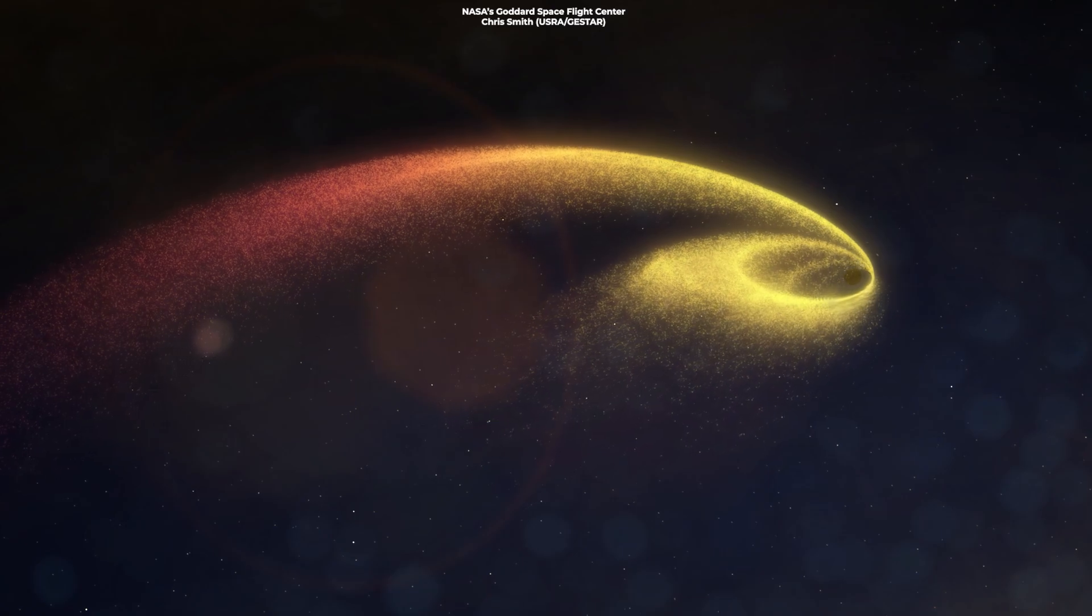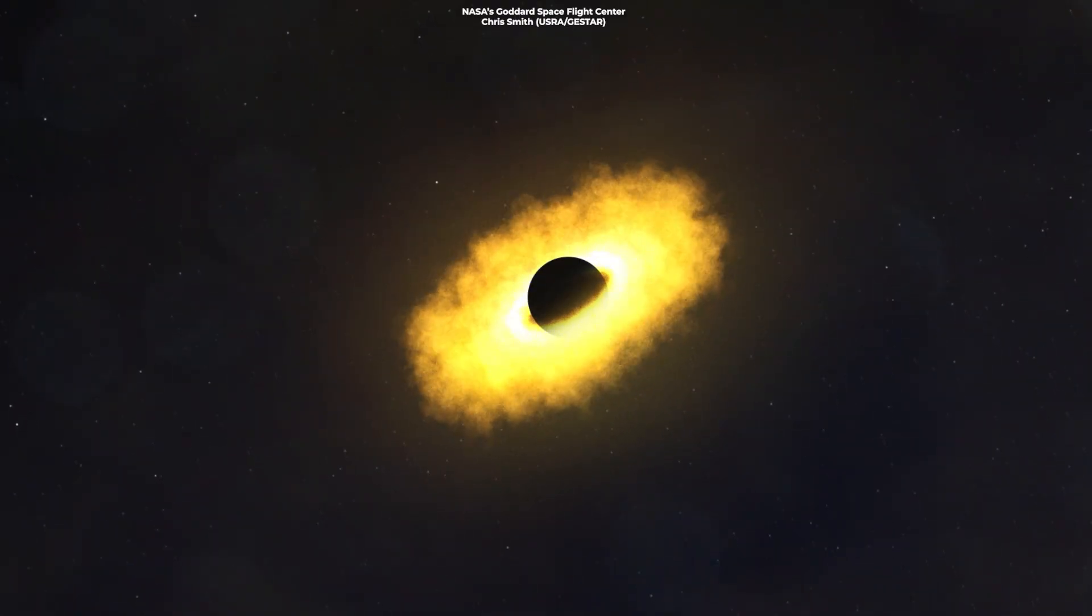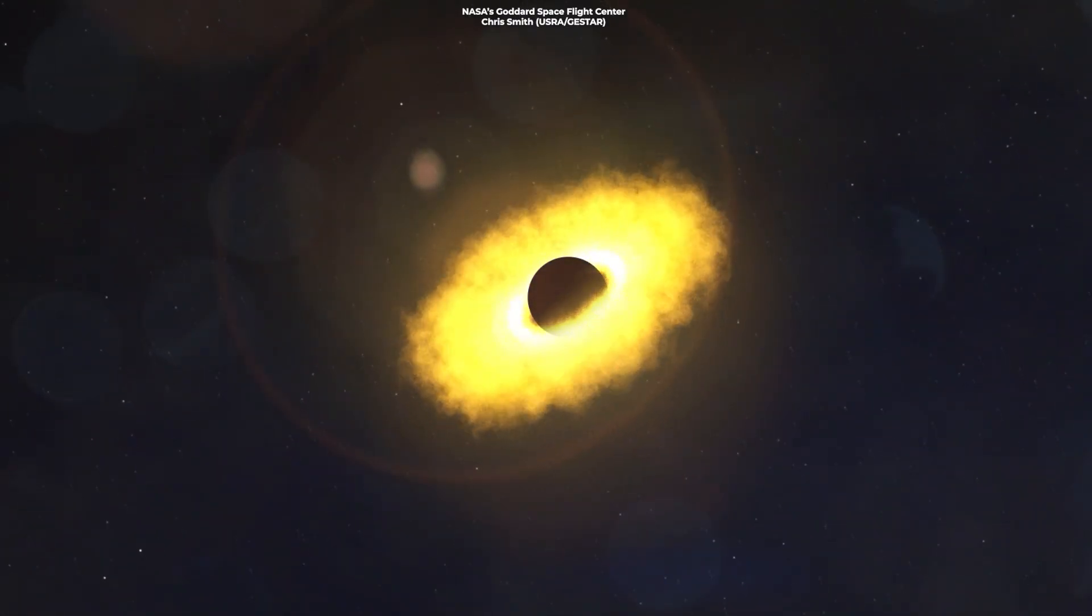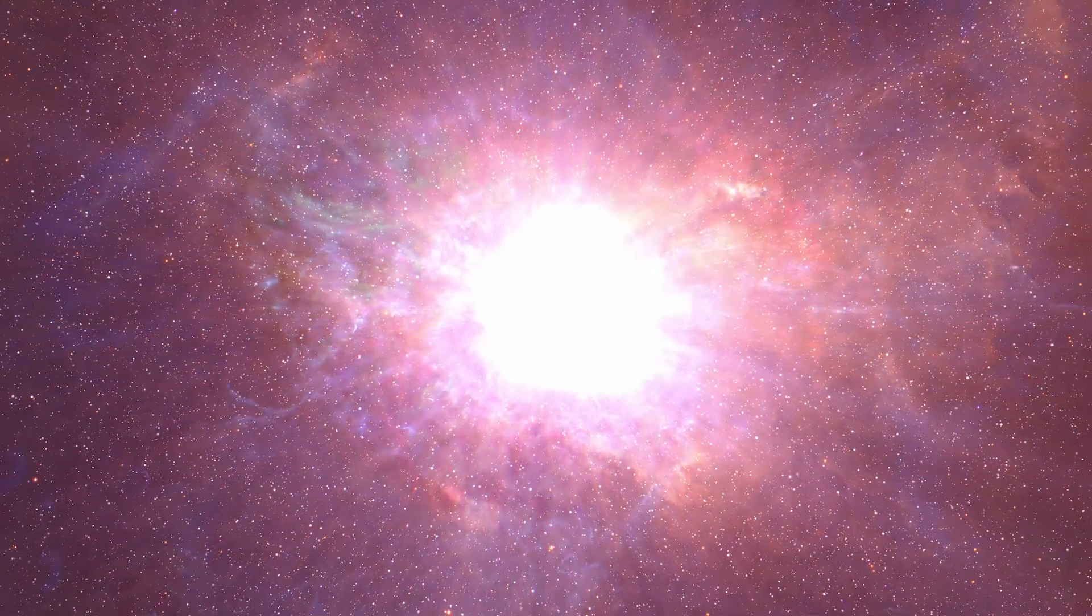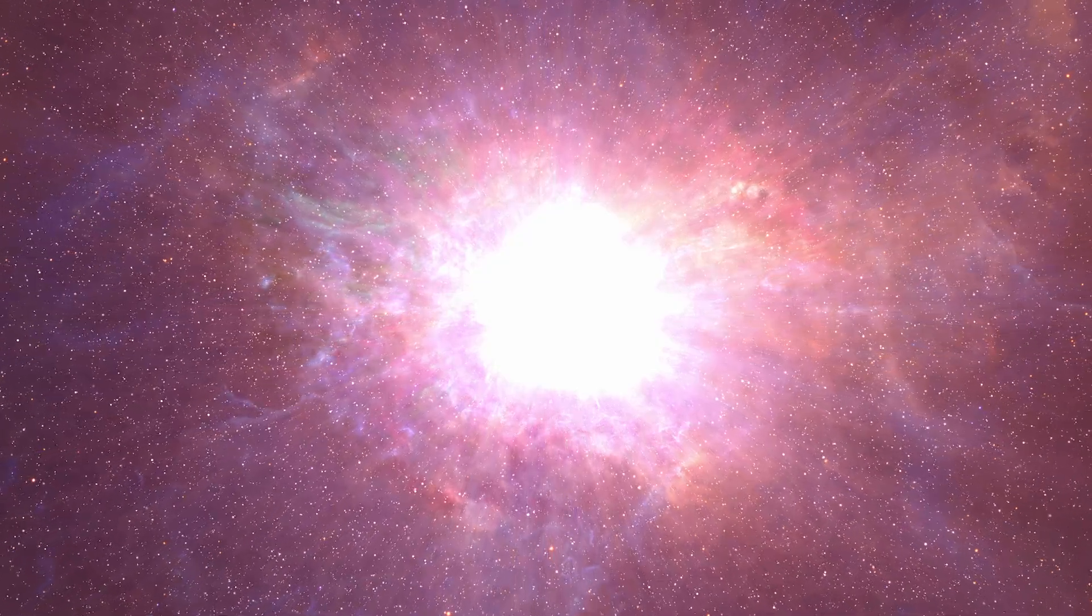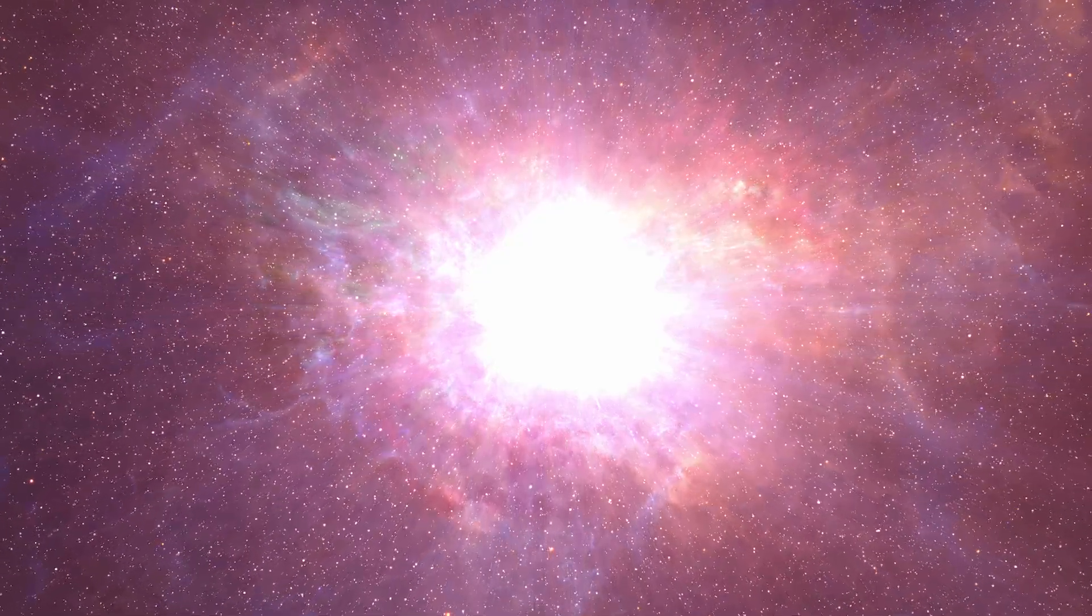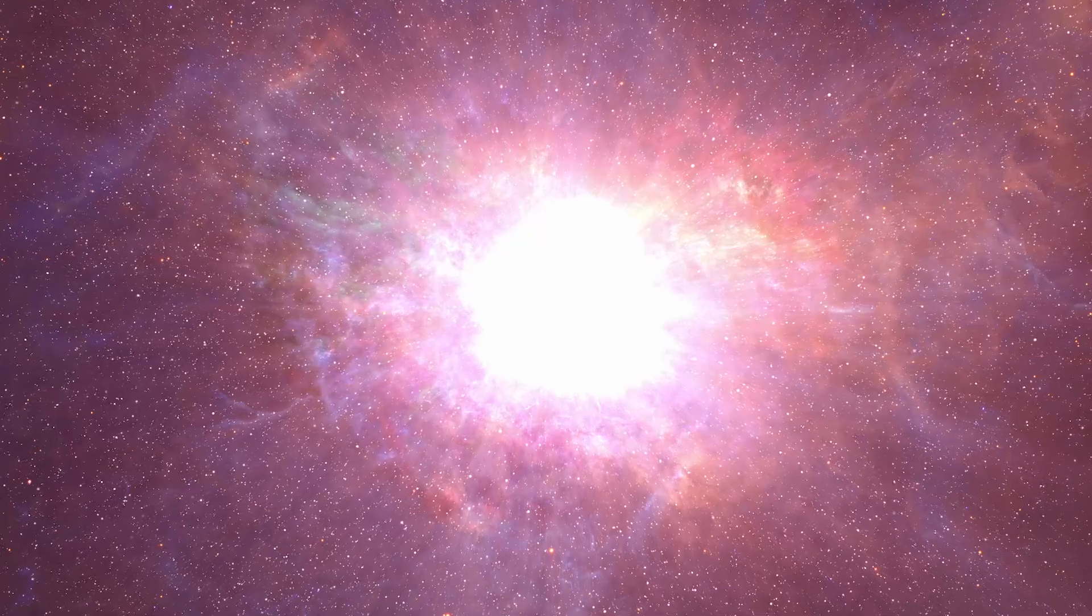The infalling matter from the star will form an accretion disk around the black hole, which produces thermal emission that we can observe from Earth as a bright transient. During such events, black holes can glow brighter than a supernova that can last from weeks to a few months before fading.